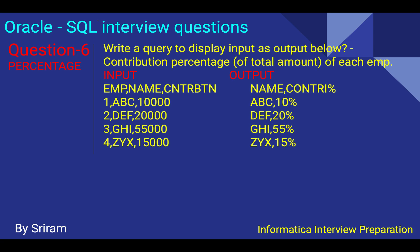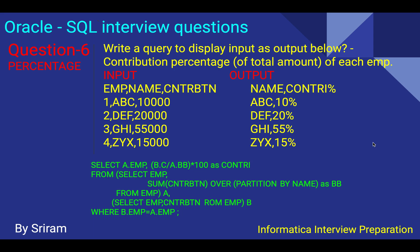Question six is about percentage calculations. Write a query to display contribution percentage for each employee based on the total amount. For example, if total contribution is 100%, the first employee's contribution is 10%, 'def' is 20%, 'gha' is 55%, and so on. The interviewer wants a query that calculates each employee's percentage contribution from the total.